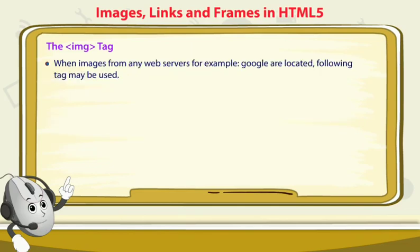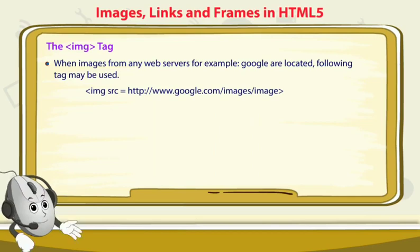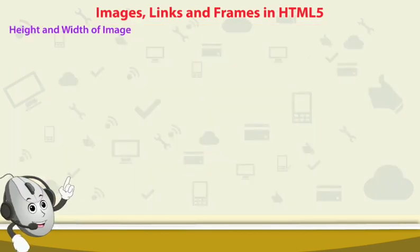When images are from any web page, for example Google, you use the full URL in the tag: IMG SRC equal to 'http://www.google.com/images/image.jpg'. To get the URL, you can right-click on the image, click on the title or address bar, and copy the link address.